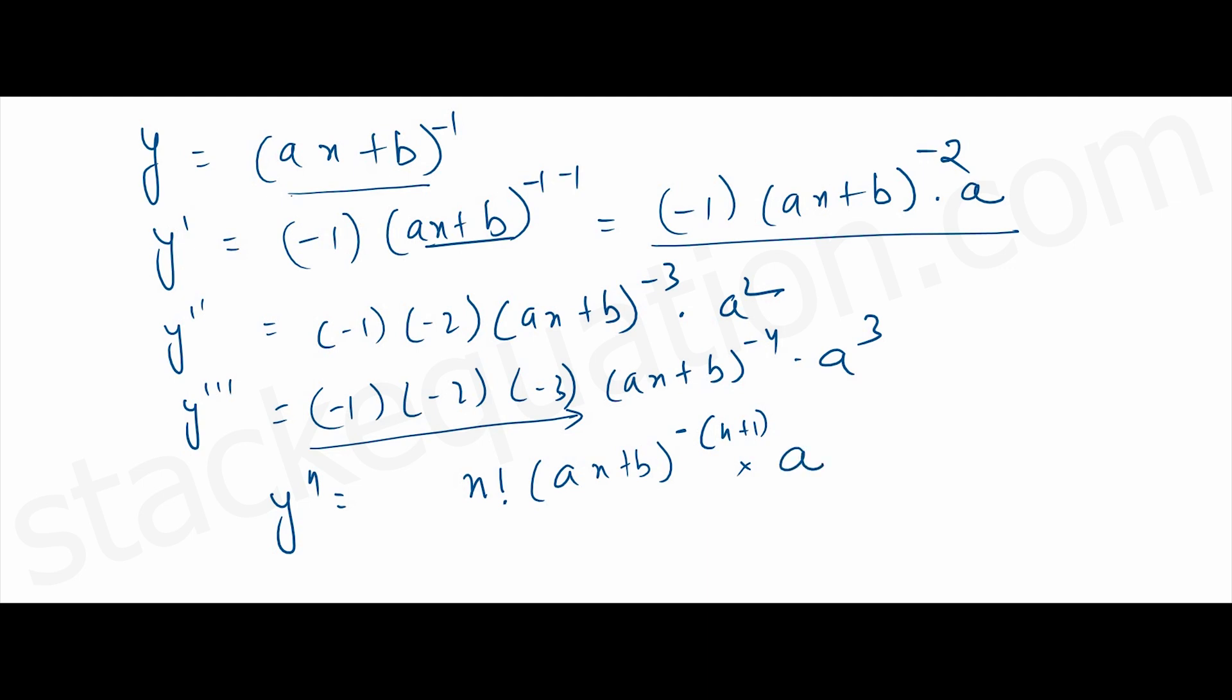So write (ax + b) to the power minus n plus 1 times a. Here while finding the third derivative, the exponent of a is 3. So here also the exponent of a will be n for nth derivative.